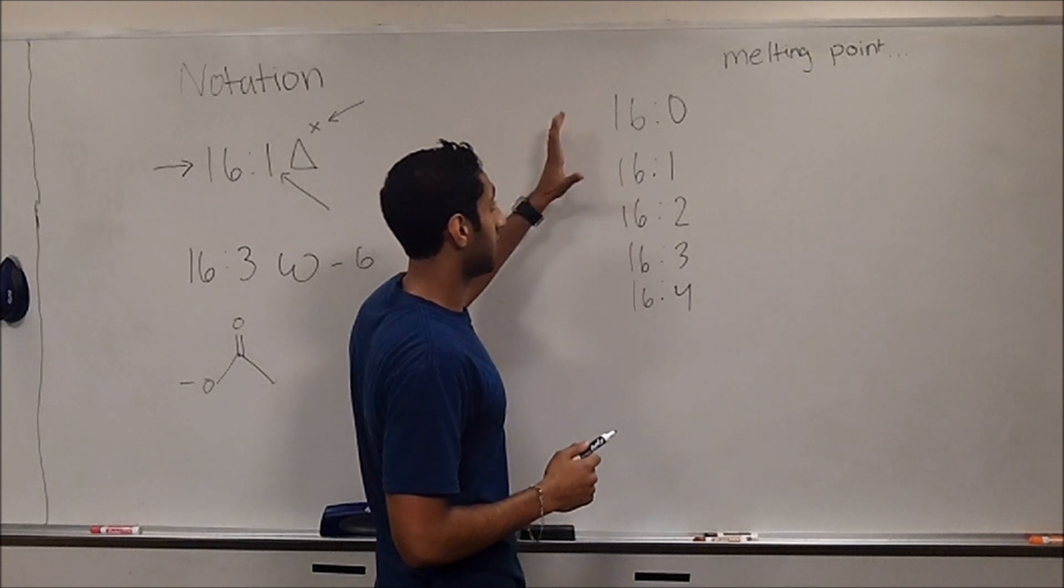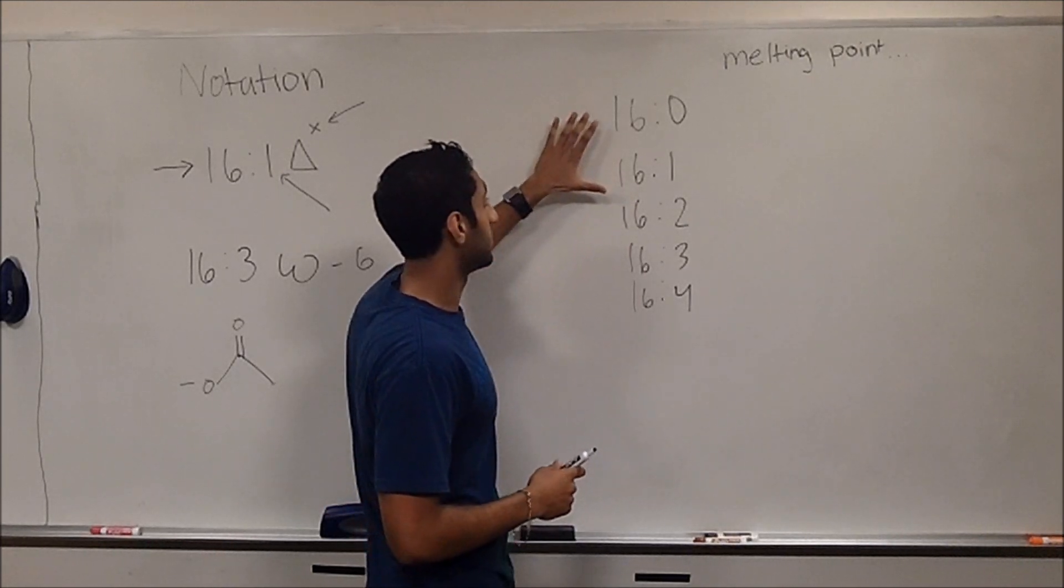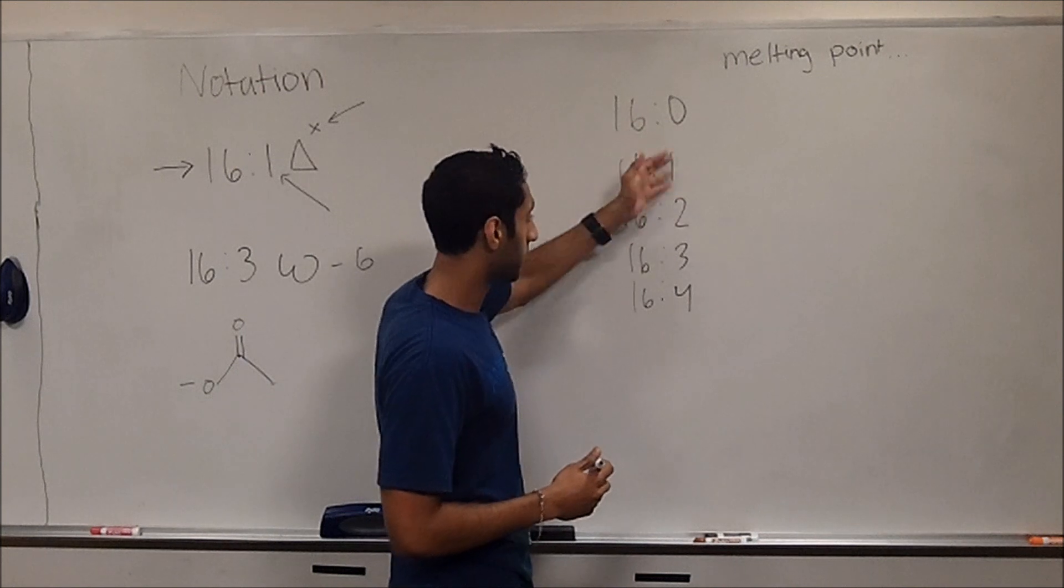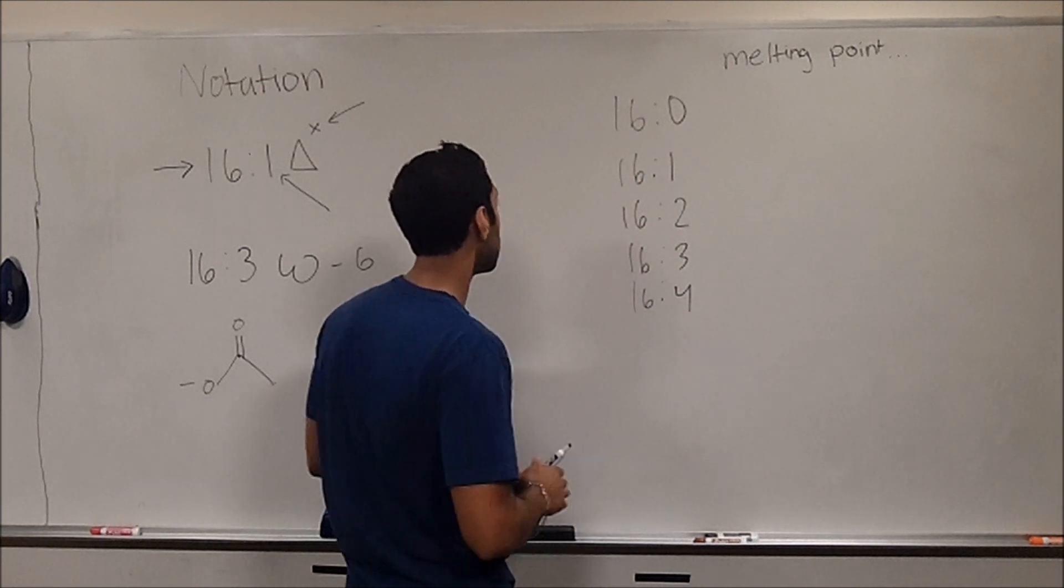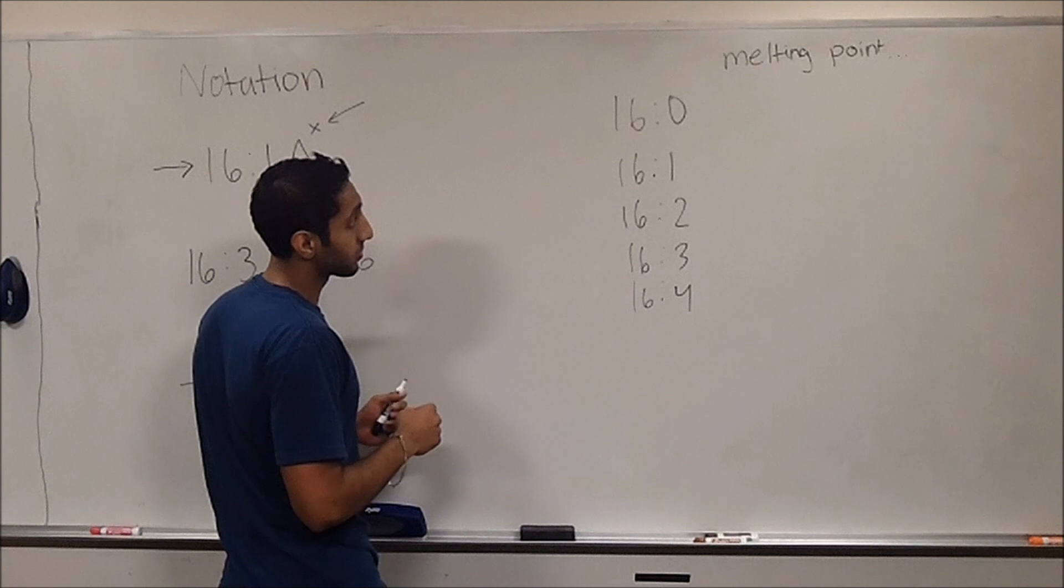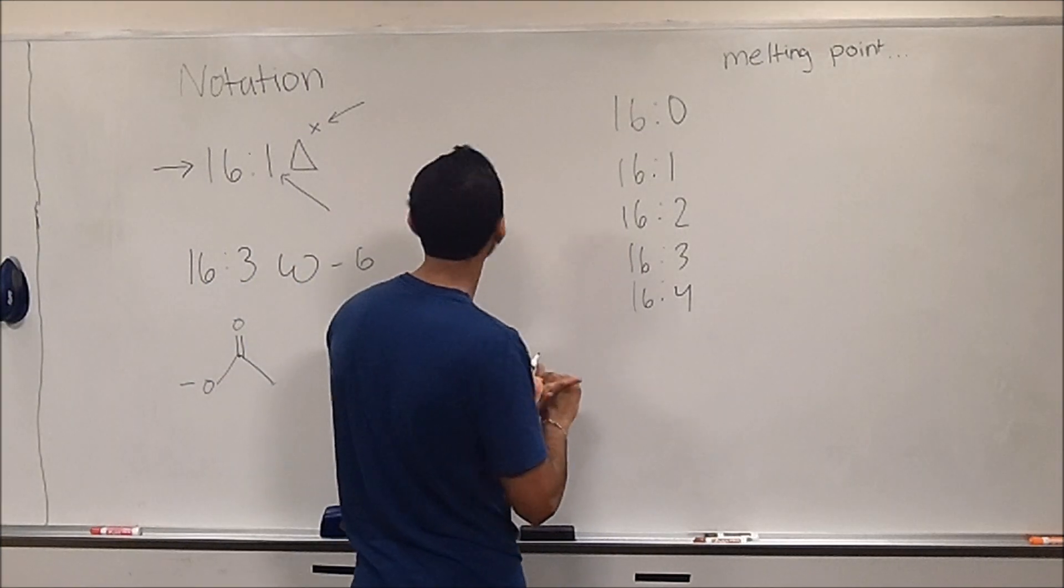The available fatty acids that we have to compare are 16:0, 16:1, 16:2, and 16:3 successively. Now the key to actually solving this problem has two components.